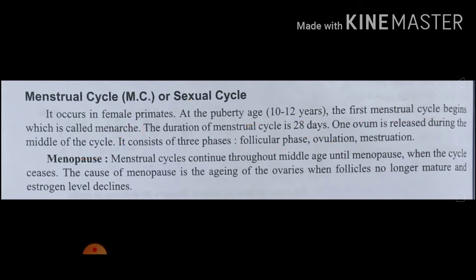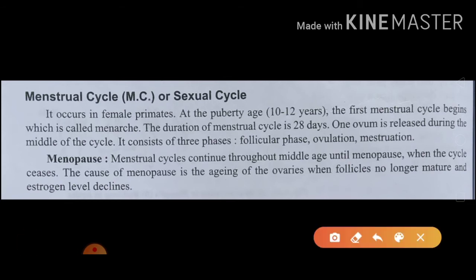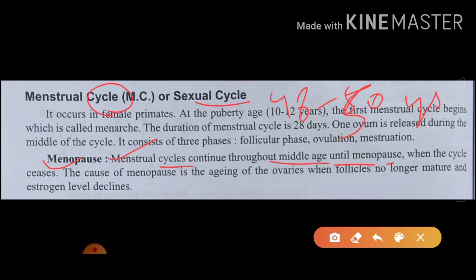The next terminology is menopause. The menstrual cycle continues from puberty until middle age, when menopause occurs. Menopause is when the menstrual cycle stops at around the age of 48 to 50 years. The cause of menopause is the ageing of the ovaries, when follicles no longer mature and estrogen levels decline.